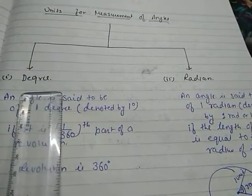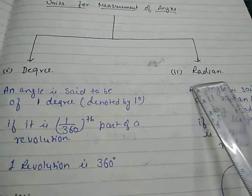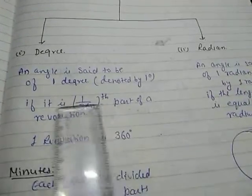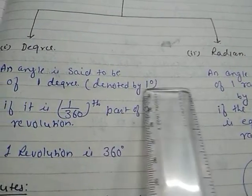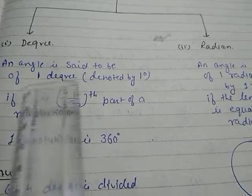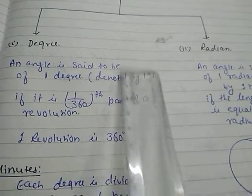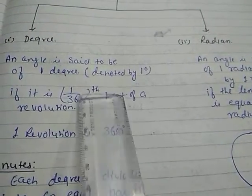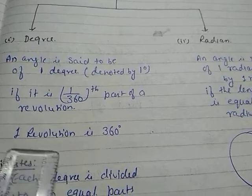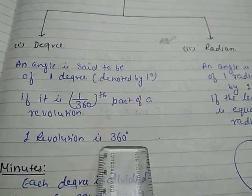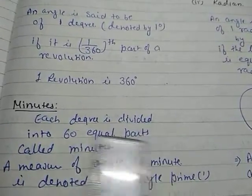There are two types of measurement of angle: the first one is degree measure and the second one is radian measure. An angle is said to be of one degree, denoted by 1°, if it is one three-hundred-and-sixtieth part of a revolution. One complete revolution is 360 degrees.